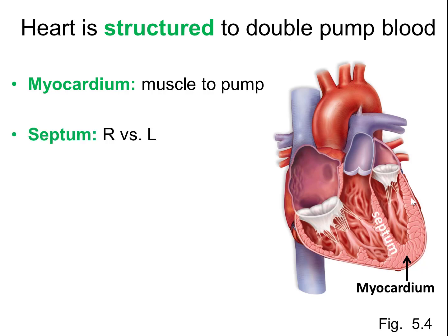The heart is a double pump because there's a right side and a left side. The septum is the wall right in the middle dividing the right side and the left side. If you're facing this heart — imagine it's in a person that's facing you — this is the right side, and over here is the left side.